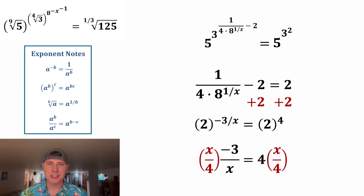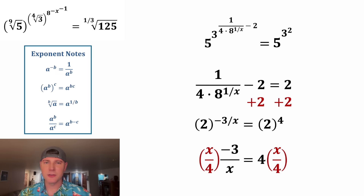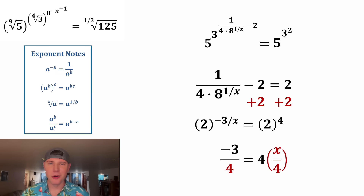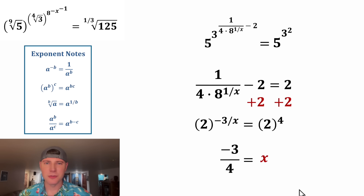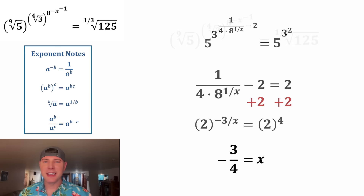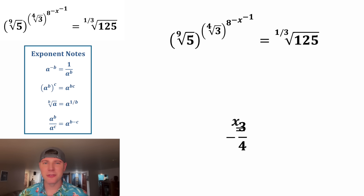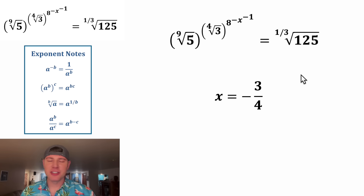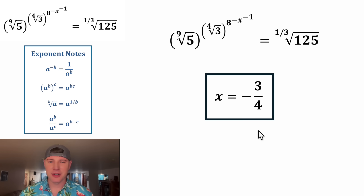Now we have negative three over x equals four. We can multiply both sides by x over four. On the left-hand side, this x and this x cancel, leaving us with negative three over four. On the right-hand side, this four and this four cancel, leaving us with x. So x equals negative three-fourths. In this given equation, the solution for x is negative three-fourths. Let's put a box around it.